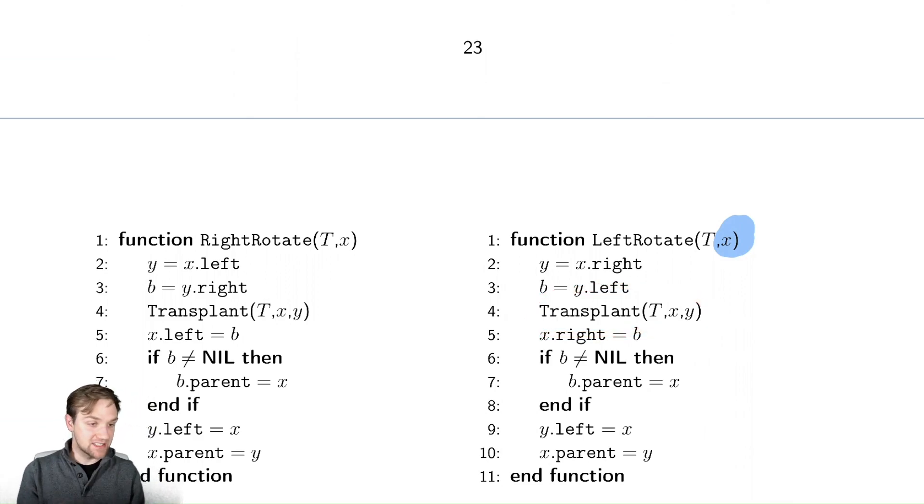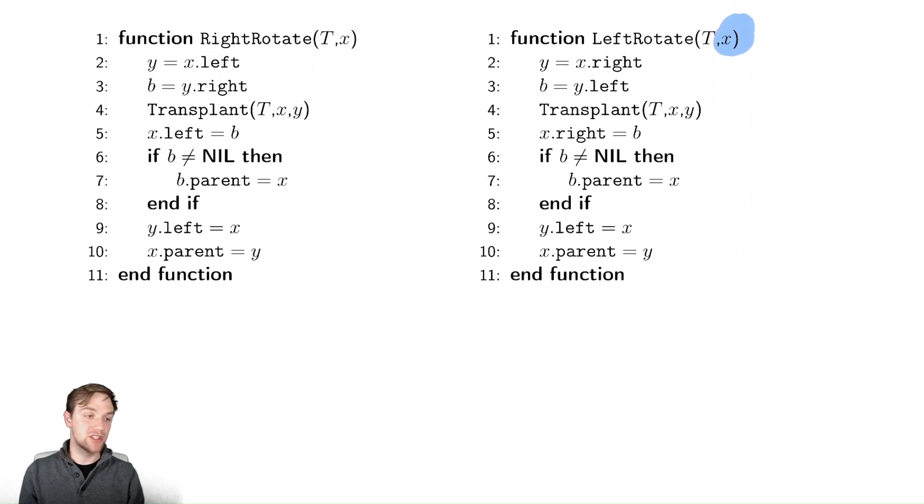So this is the exact same. We just got to be careful with the letters because I decided to change it to keep them both to have an input of x. So these are our two rotations. These are two of the most standard ways to reduce the height.